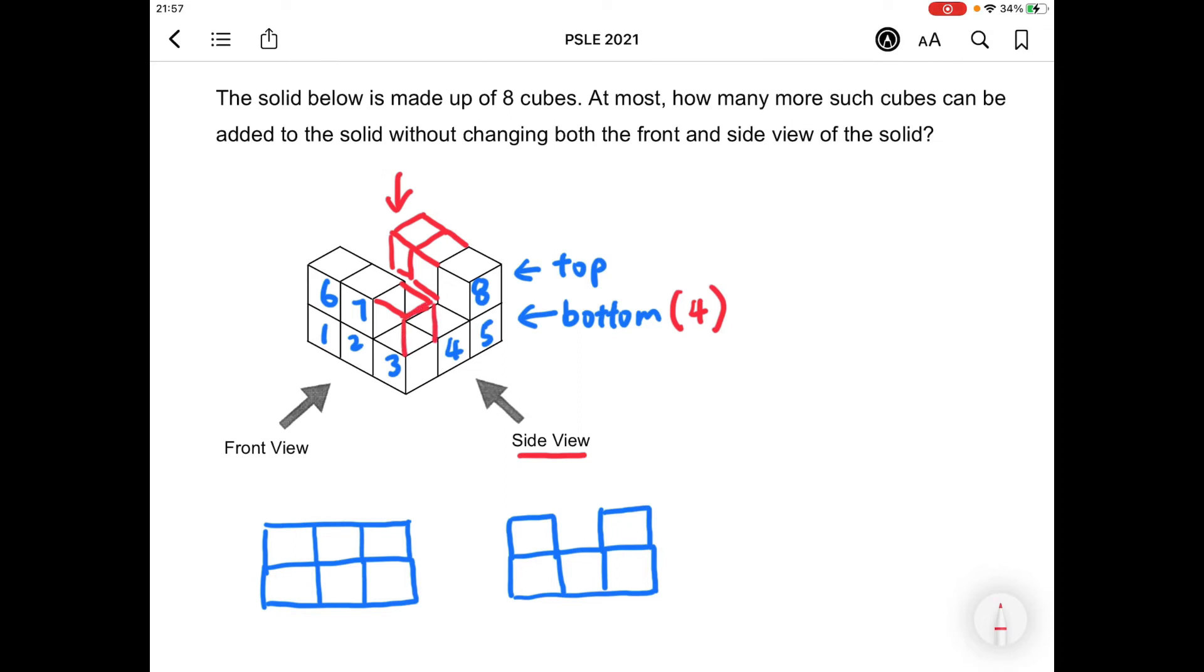Since there's already a square for the side view over here, there should be a total of three more cubes for the top layer.